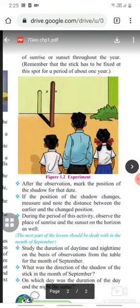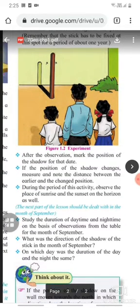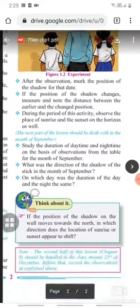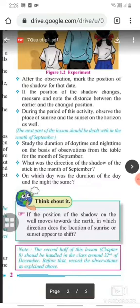Remember that the stick has to be fixed at this spot for a period of about one year. After the observation, mark the position of the shadow for that date. If the position of the shadow changes, measure and note the distance between the earlier and the changed position. During the period of this activity, observe the place of sunrise and sunset on the horizon as well.